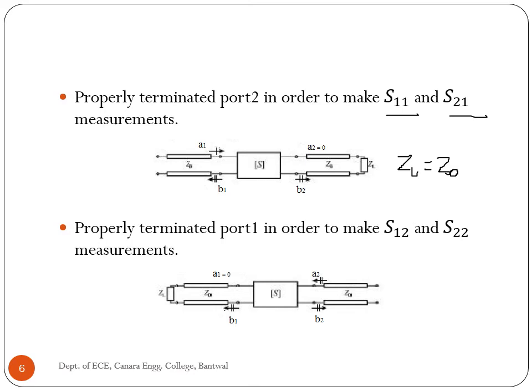We can measure S12 and S22 when the source impedance is equal to the line impedance Z0. To measure S12, we inject into port 2 and measure the signal power leaving port 1. For S22, we inject a signal at port 2 and measure its reflected signal.